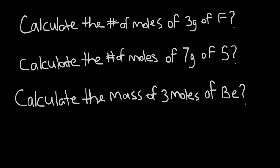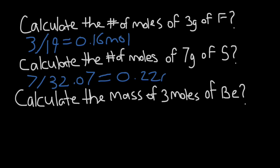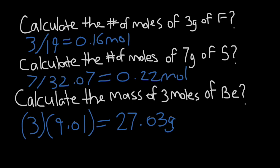Okay. For the first one, it's going to be 3 divided by 19 equals 0.16 mole. For the second one, it will be 7 divided by 32.07, and that equals 0.22 mole. For our last question, it's actually going to be us solving for the mass. It'll be 3 times 9.01, and that equals 27.03 grams. If you weren't able to calculate these ones, try looking back at the previous questions and make sure that you followed the same methodology. Thank you guys for watching. If you have any questions, please leave them below. Thank you.